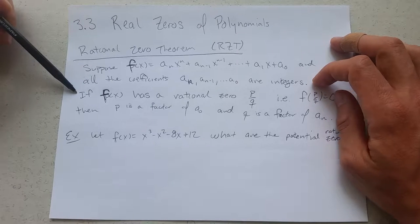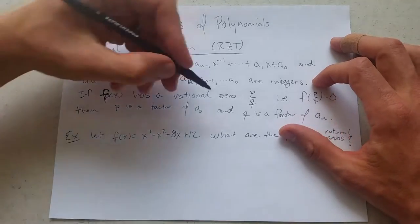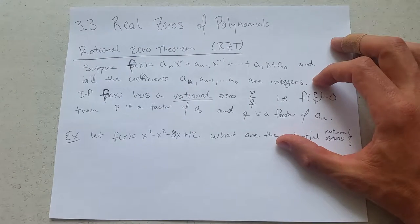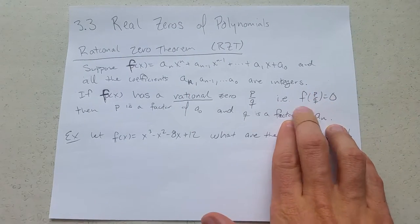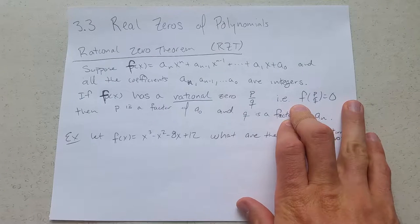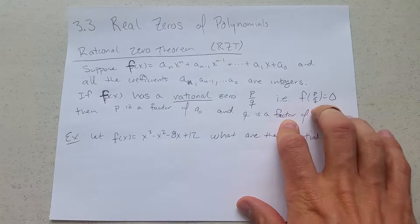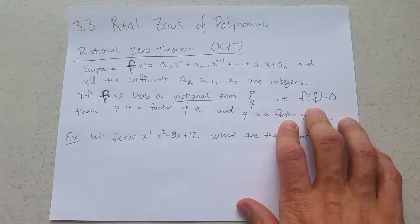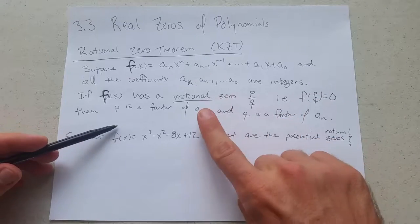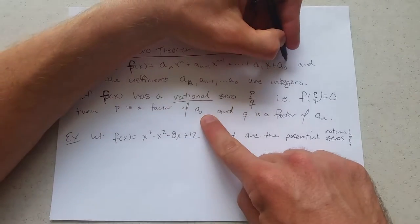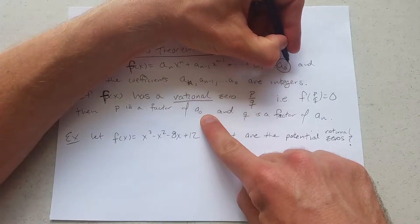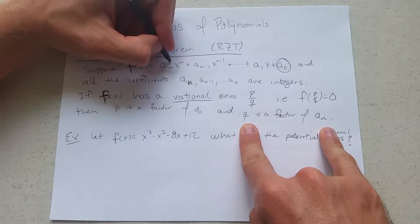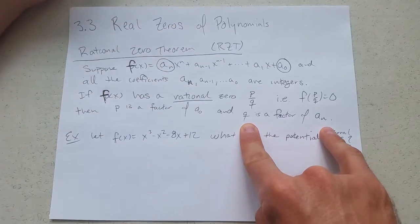If there's a rational zero - rational number means a fraction of integers - what does a zero mean? It means if you plug in that x value into f, you'll get out zero. So if f of this number equals zero, we actually know a lot about this number. It means that p is a factor of a₀, and q is a factor of aₙ.